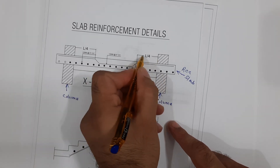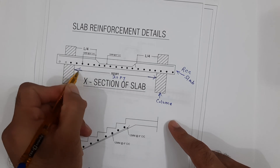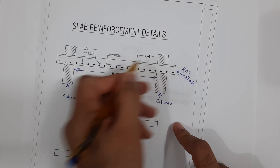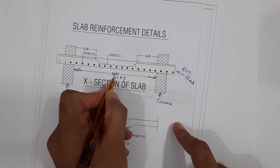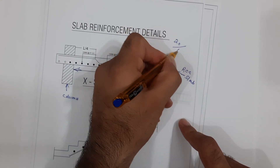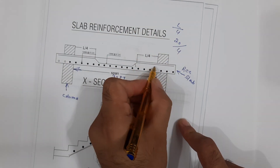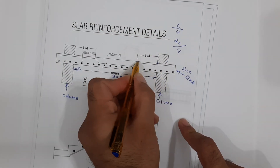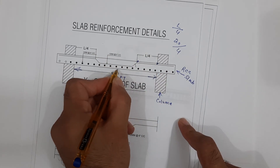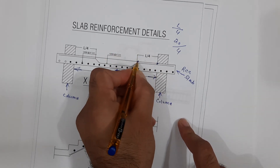Here you can see L by 4. The length between two columns is L, or span. L by 4 means: if the span is 20 feet, then 20 divided by 4 gives L/4. This is the distance L/4 where we have negative bending moment. At mid-span we have positive bending moment, and at the distance of L/4 from the support we have negative bending moment.